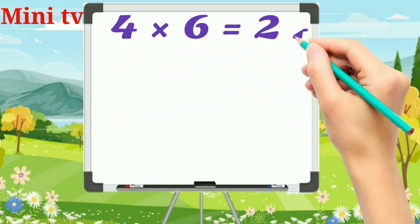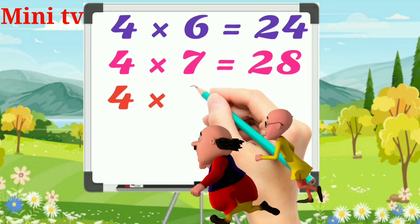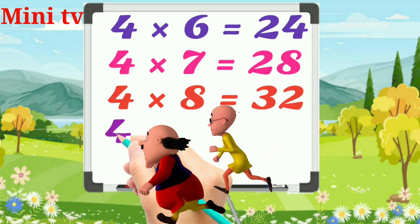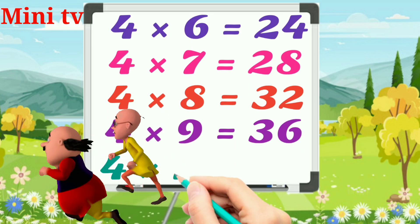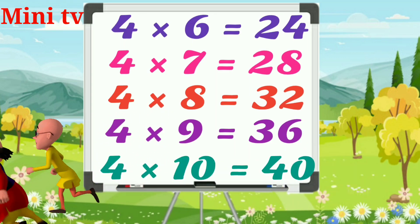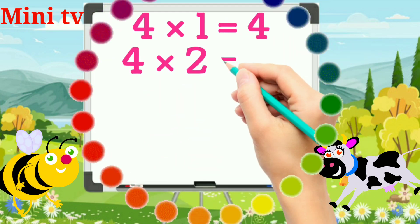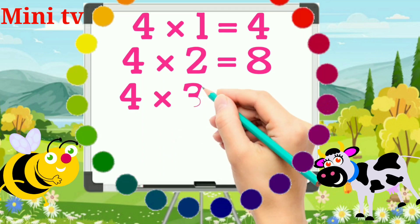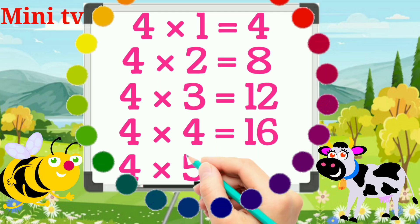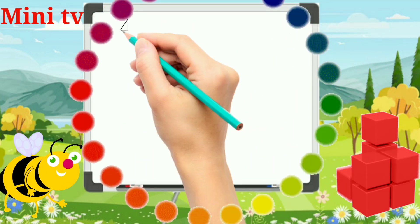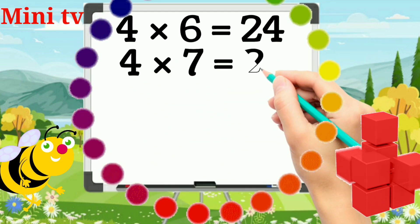4 sixes are 24. 4 sevens are 28. 4 eights are 32. 4 nines are 36. 4 tens are 40.